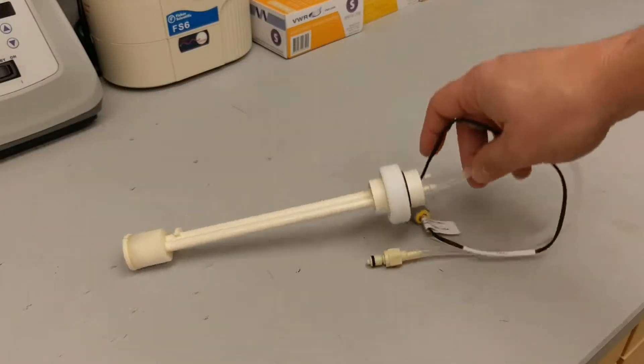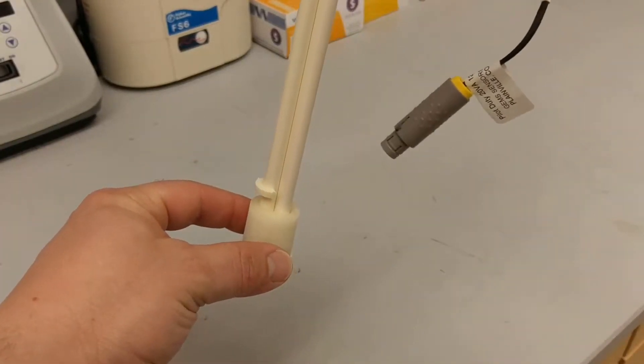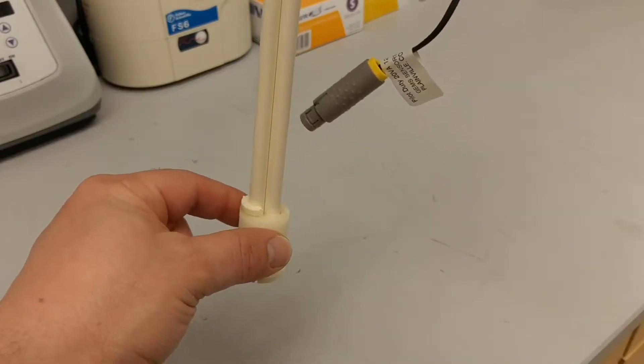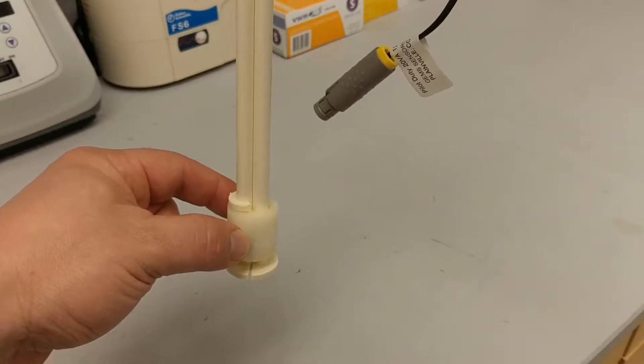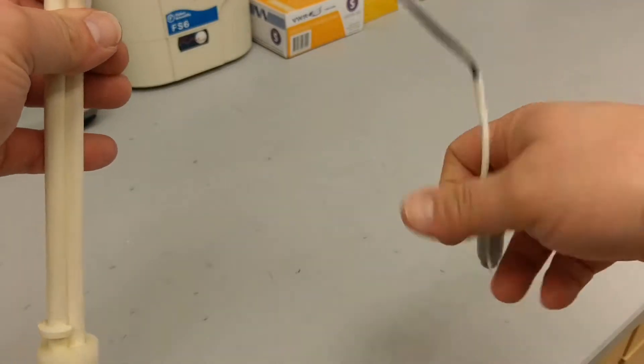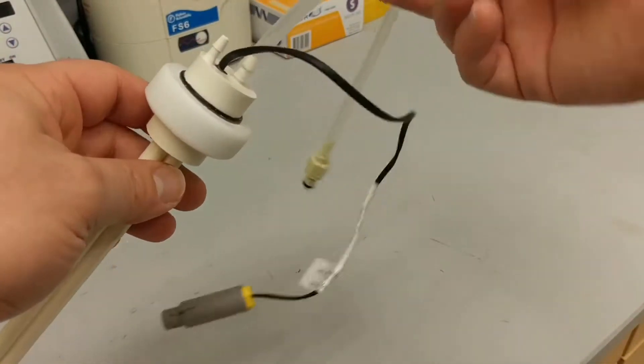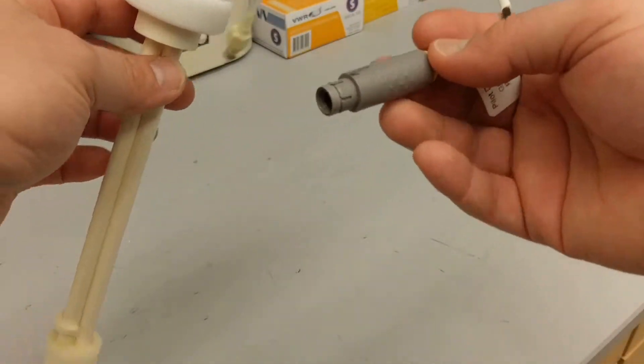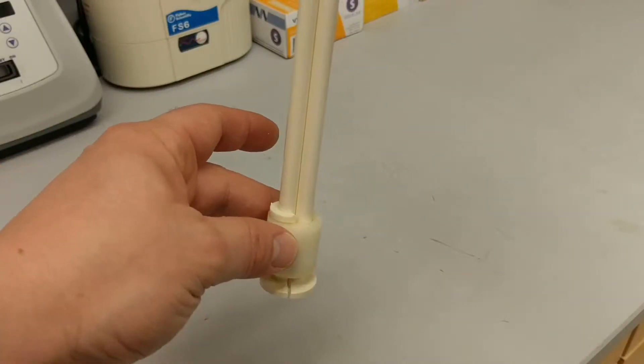It basically has a float at the bottom, so that when the float is in a container full of fluid, this float portion will raise. What happens then is that will complete the circuit, and the machine will read that the tank is full through this connector. This line is where the fluid passes through, and this line is just the circuit telling the machine that it's full when the float is in the up position.